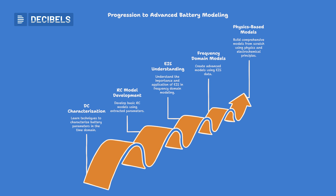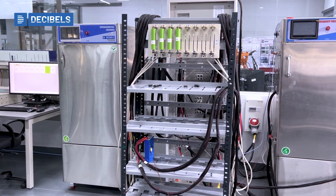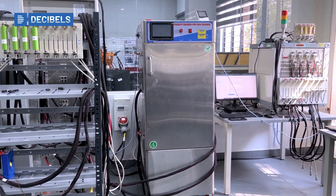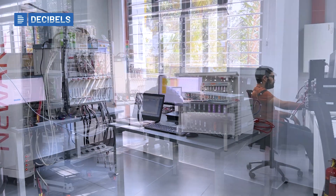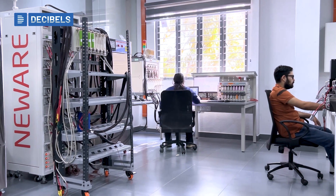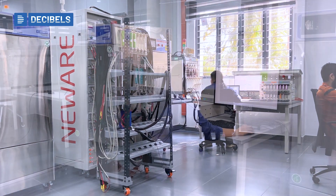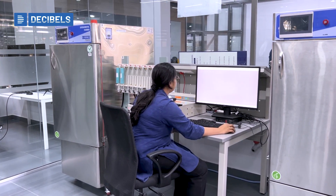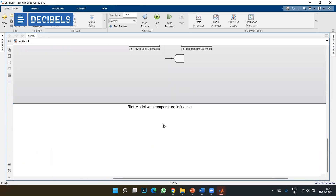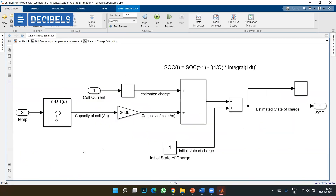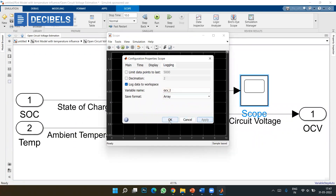All of these activities will be taught in the online courses. You will also have an offline visit to the lab at Decibels, which has a state-of-the-art facility for characterization techniques, where you get to perform DC characterization, learn how to collect data, and extract parameters such as RC parameters to develop RC models — 1RC, 2RC, and further RC pairs.